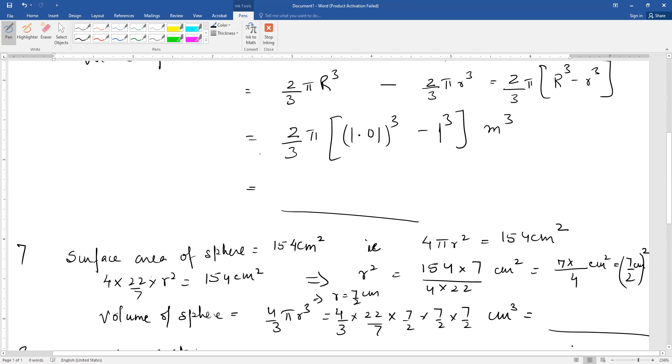The whitewashing cost was 498.96 rupees. Rate of whitewashing was rupees 2 per square meter. We have to find first the inner surface area and then volume.